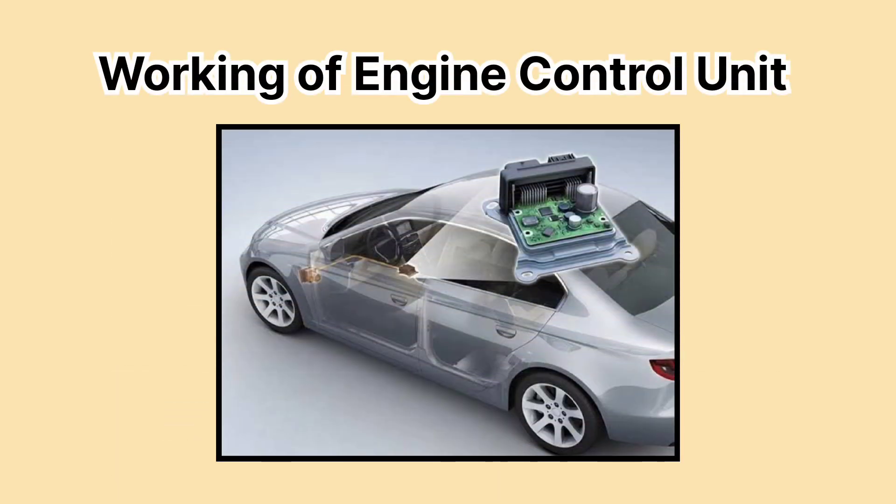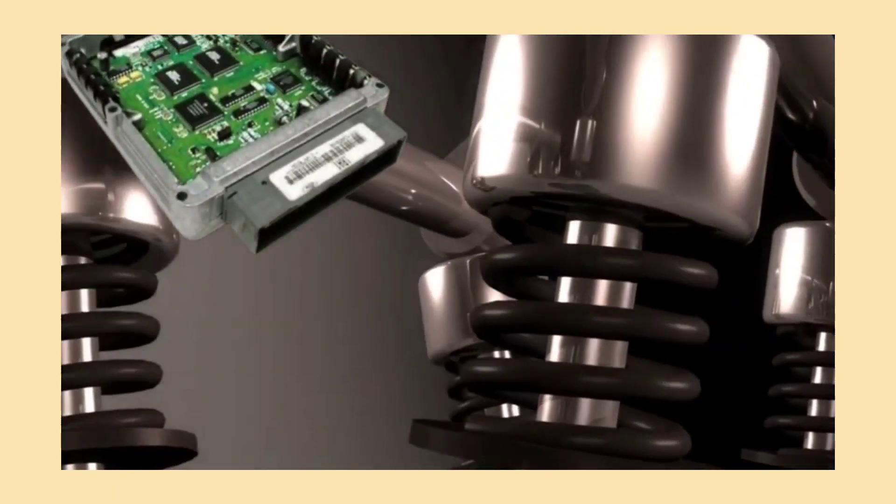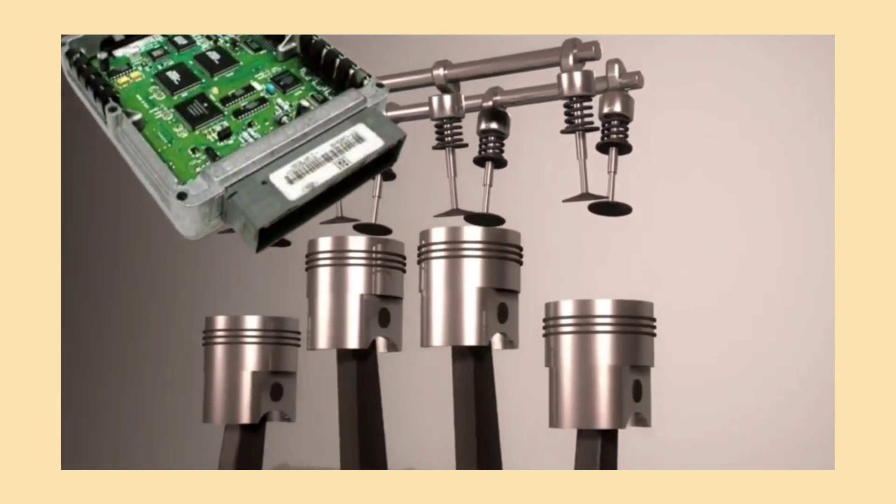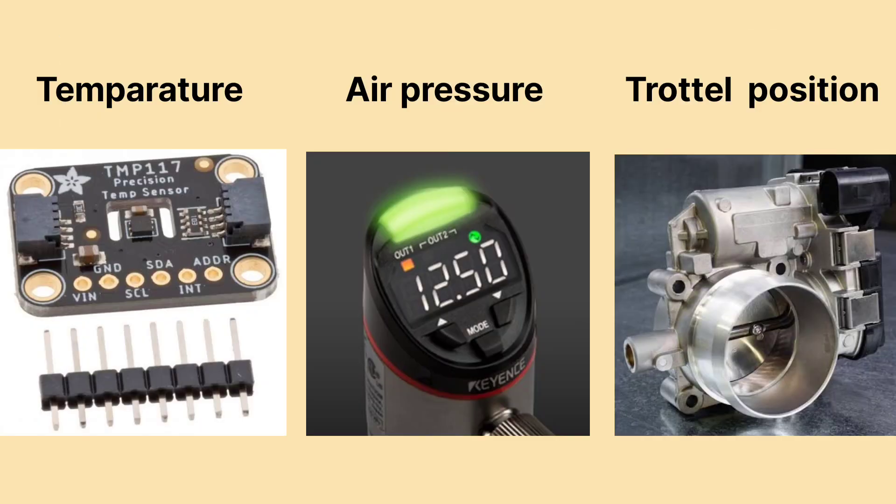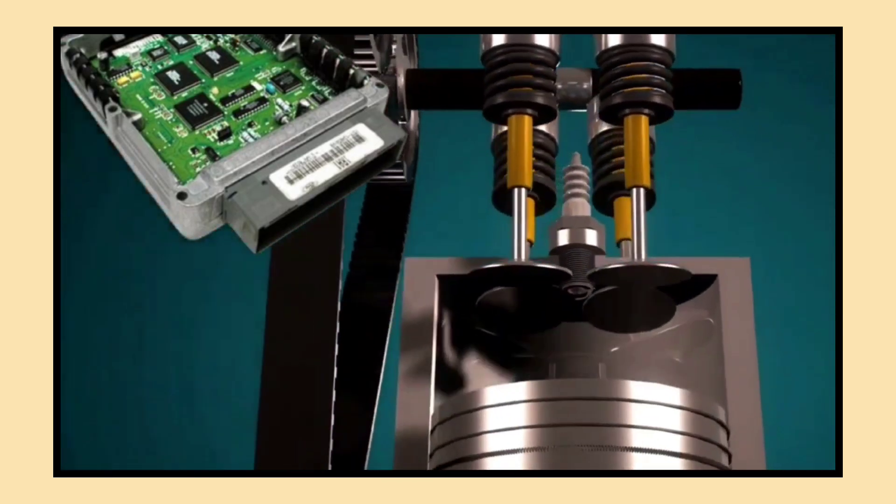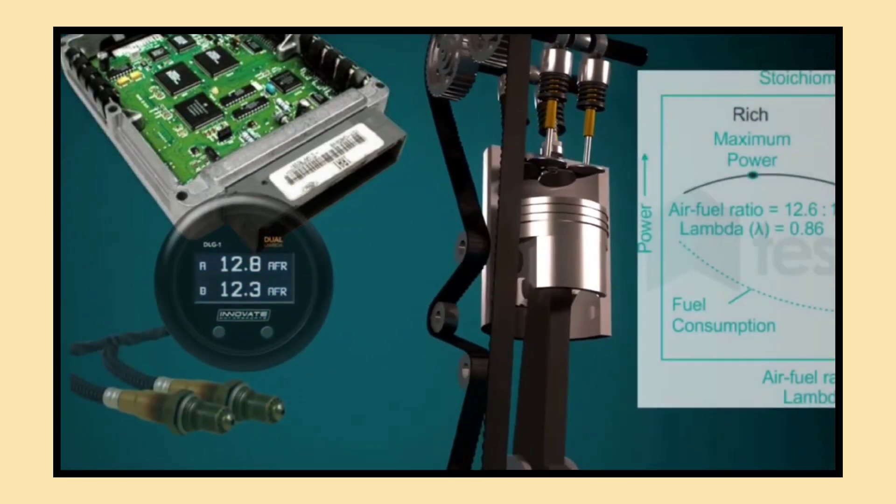Alright, so how does the ECU actually work? Think of it as the brain of your car. It communicates with various sensors throughout the engine. These sensors monitor things like temperature, air pressure, and even the position of the throttle. When the sensors send data to the ECU, it processes this information in real time.